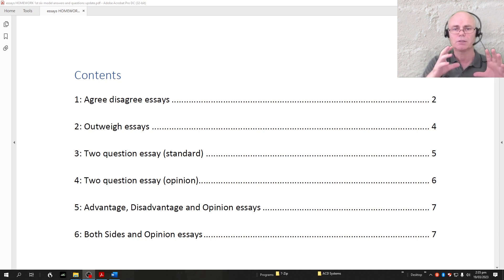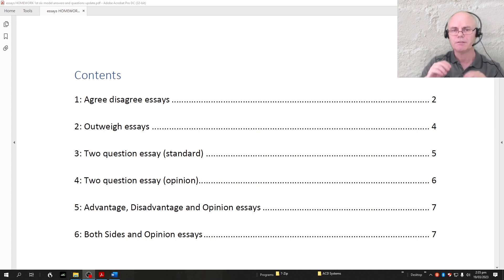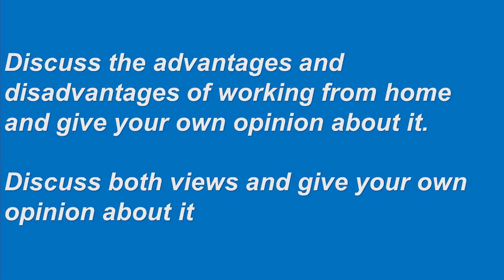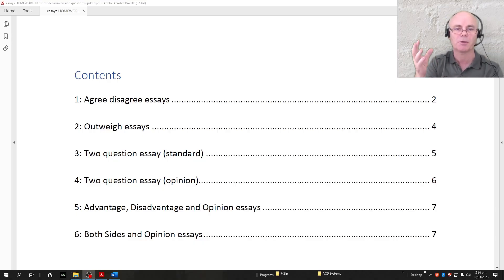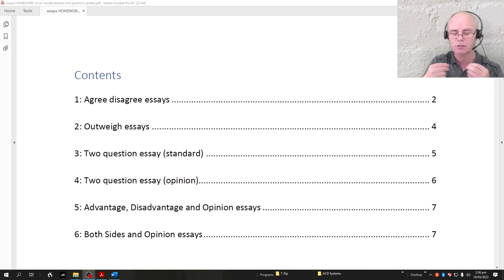The last two types I've called in the past 'both sides and opinion essays.' Both involve two sides to a topic plus giving your own opinion. There's a slight distinction between the two: in the first kind — advantage, disadvantage and opinion essays — you're presenting advantages and disadvantages along with your opinion. With the other kind, the both-sides-and-opinion essays, you're covering two different groups of people's opinions — some people believe one thing, others believe another — so we have to present those groups rather than just advantages and disadvantages.